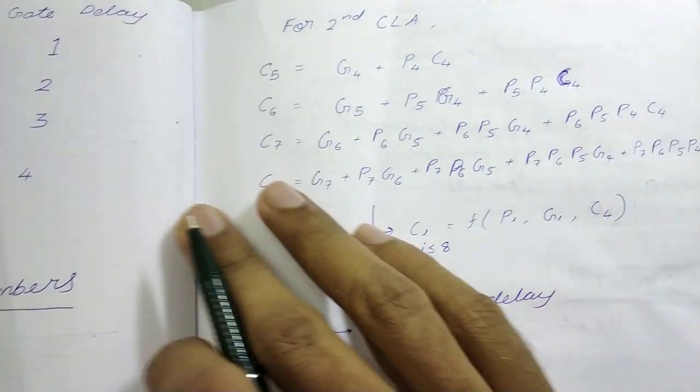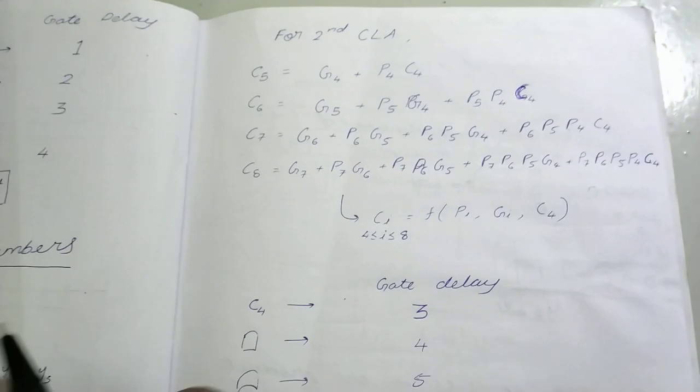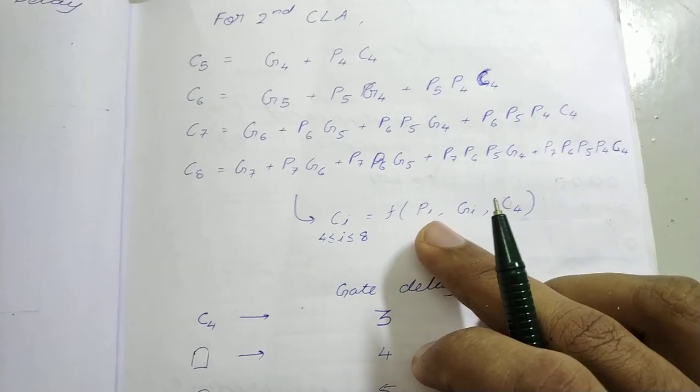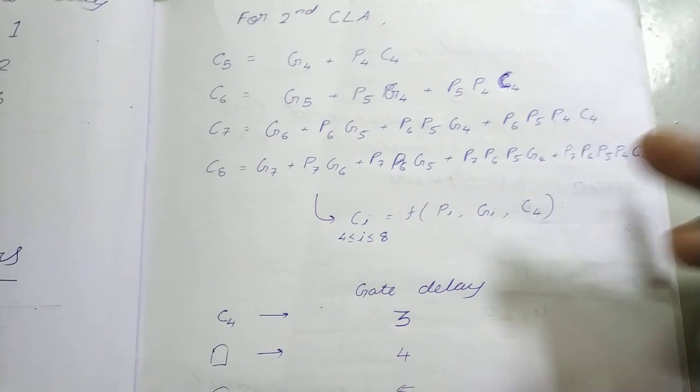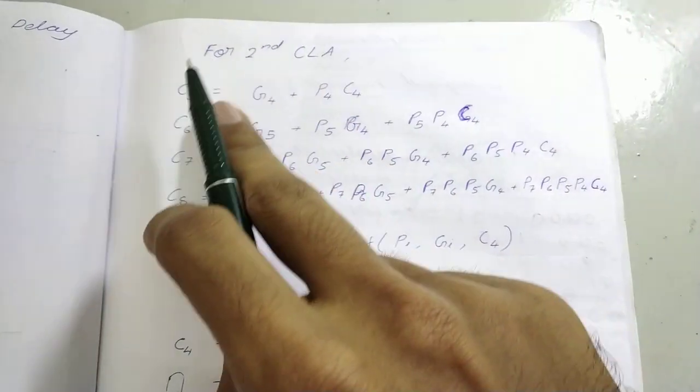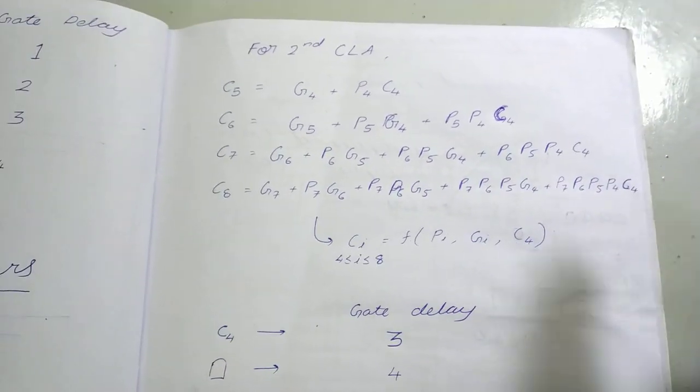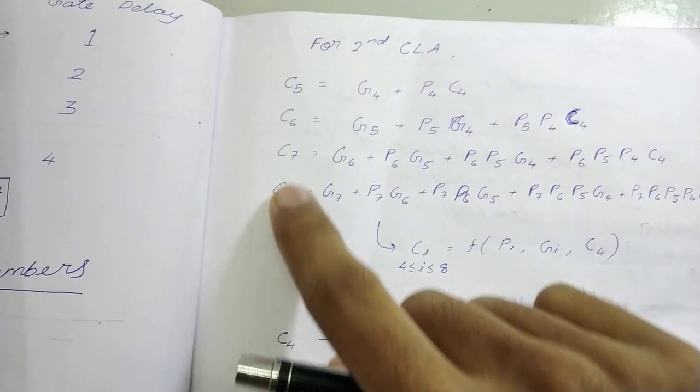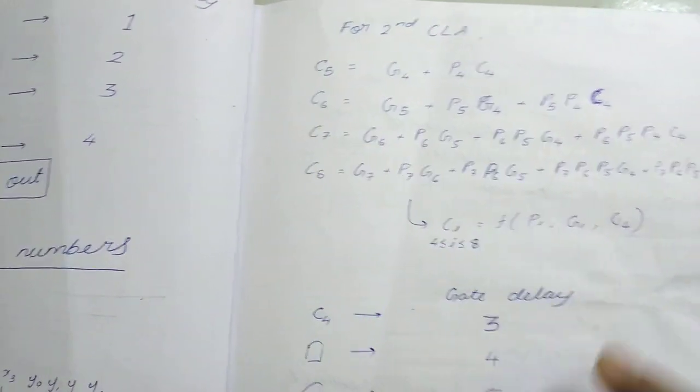So in terms of C4, GIs and PIs. So basically just like in the previous case we did for, we did CI as a function of PI, GI and C0. So for the second CLA, we get all the carries as a function of PI, GI and C4. To get all these C5 to 8, it is very easy.